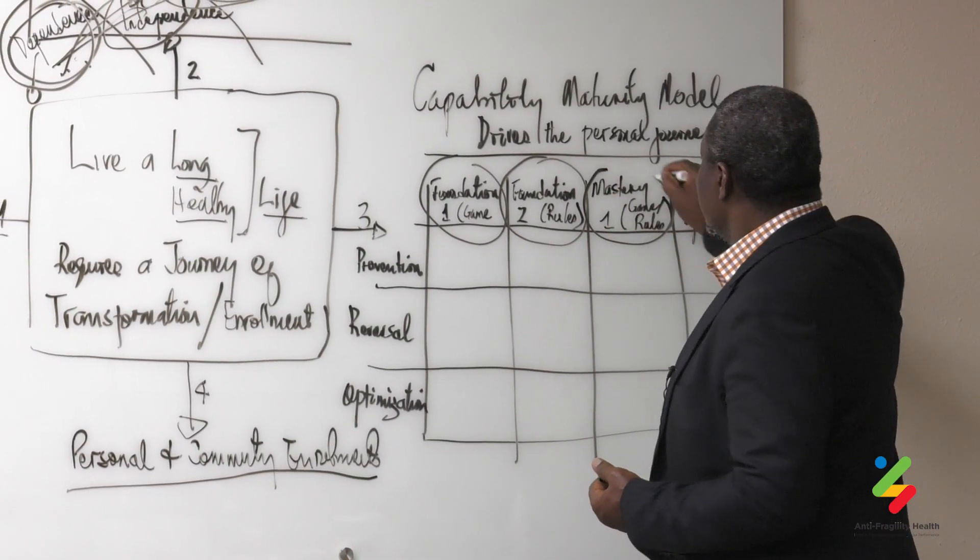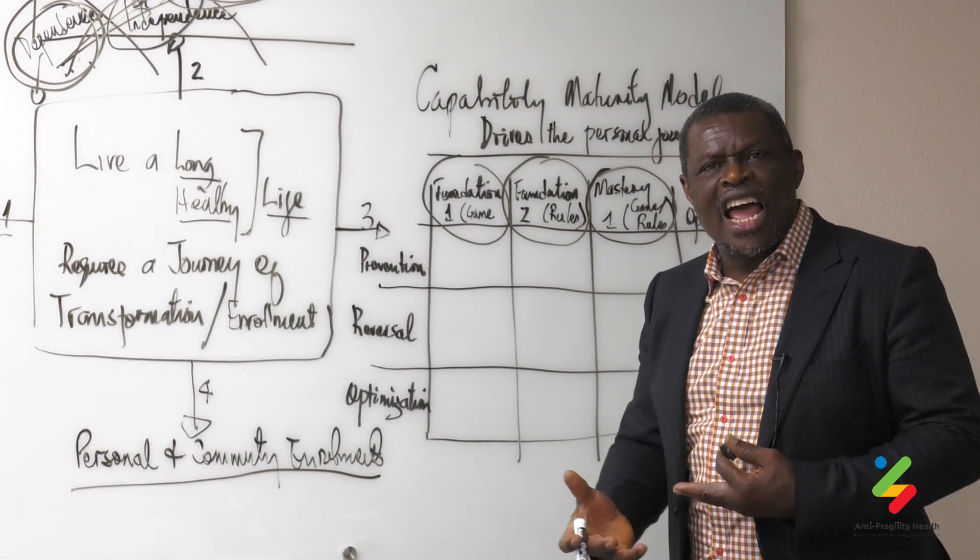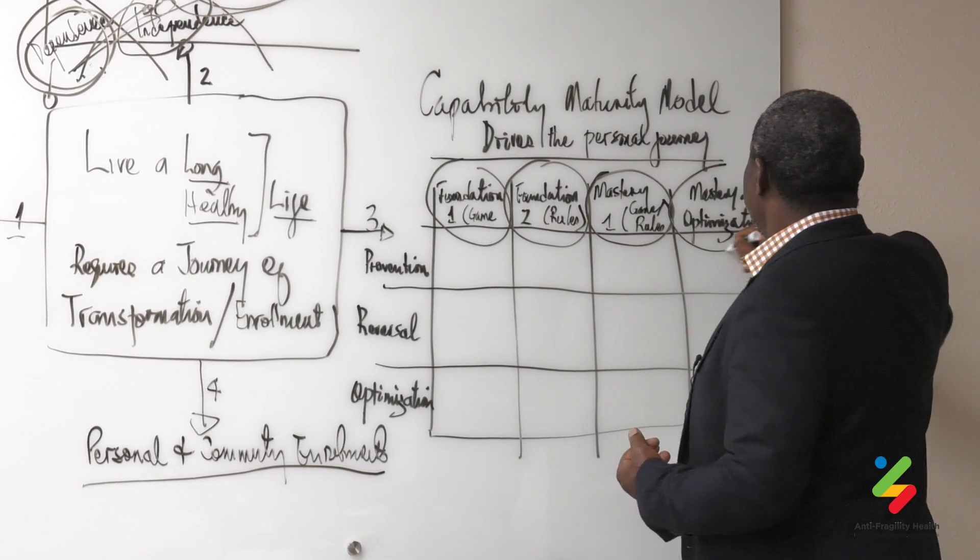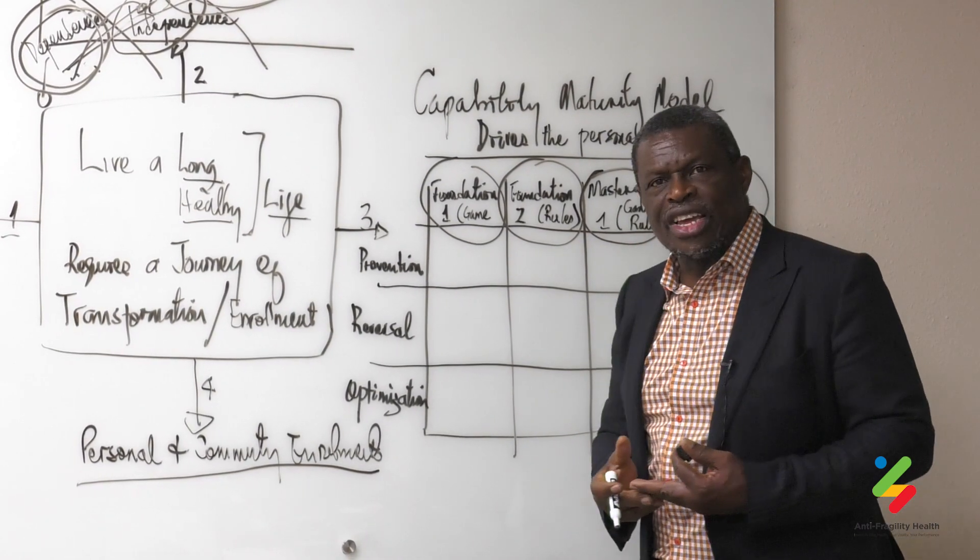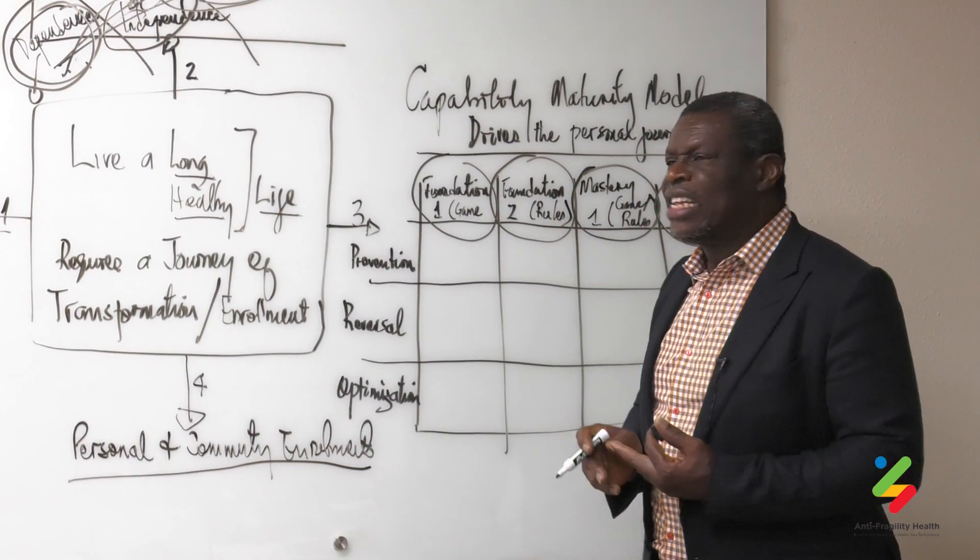In mastery one, we need to begin to change and adapt and personalize the game and the rules for ourselves. And in mastery two, we are optimizing the game and the rules.